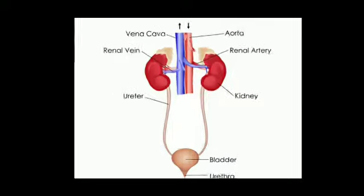Ureters are the tubes that carry waste from the kidney into the urinary bladder, and urethra is an opening through which urine comes out. When you magnify the view of the human kidney, you can see that the human kidney consists of millions of nephrons.